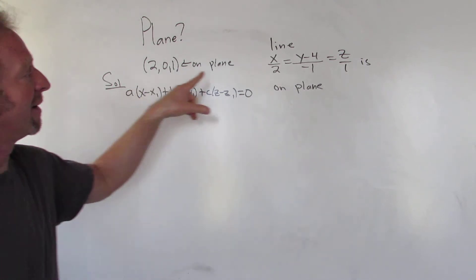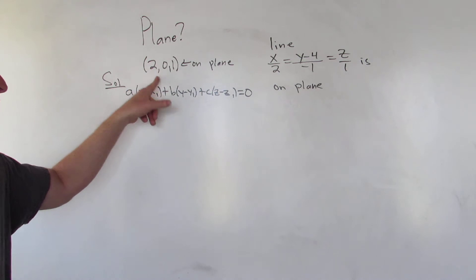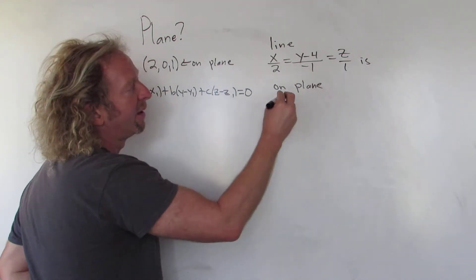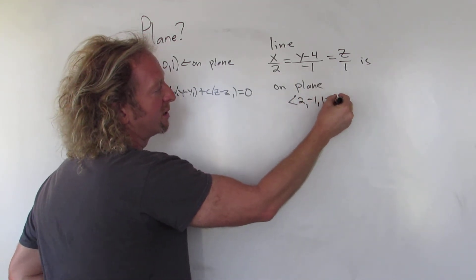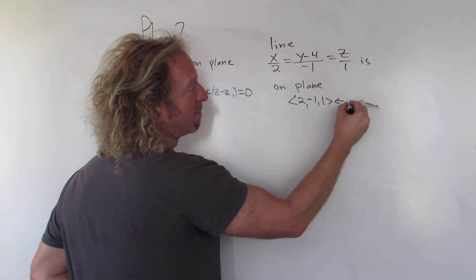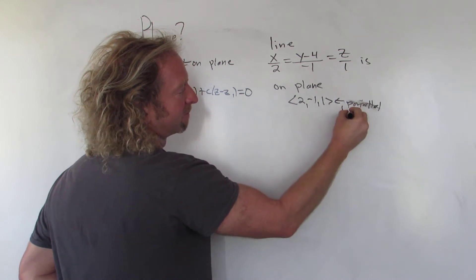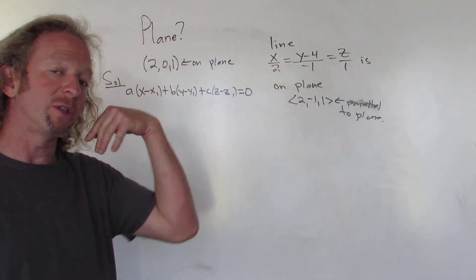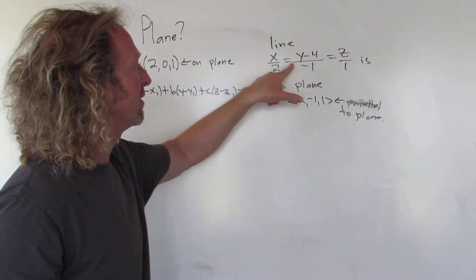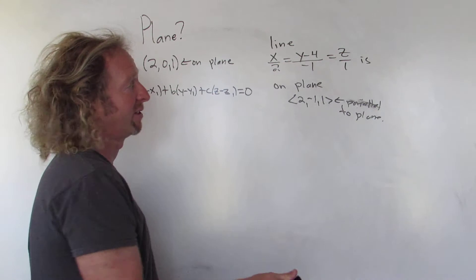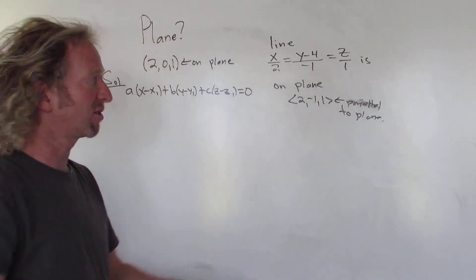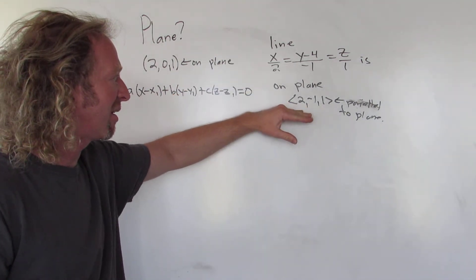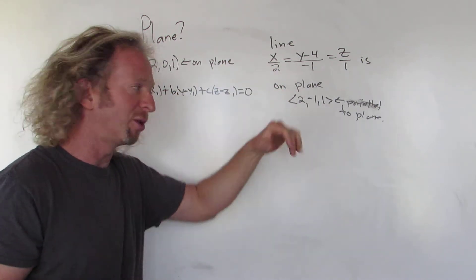We know that this line is on our plane, and we know that this point is on our plane. Because this line is on our plane, the vector (2, -1, 1) is parallel to the plane. The line is on the plane, but this vector is parallel to the line, so it's parallel to our plane. This is called the direction vector. Given the symmetric equations for a line, you can always find the direction vector — it's always just these numbers right there. It's always parallel to your line, and since the line is on the plane, it's parallel to our plane.